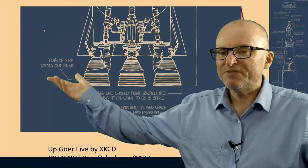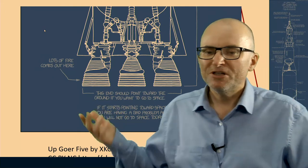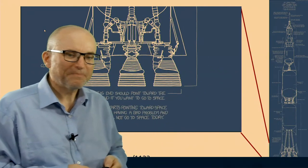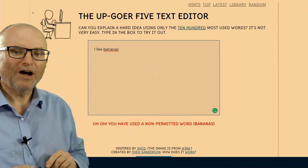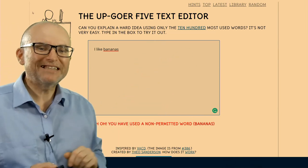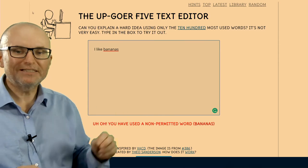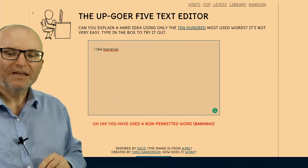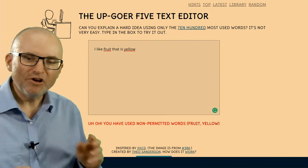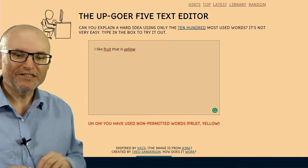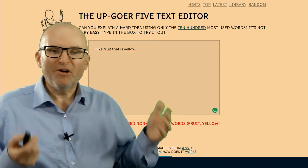And somebody has even made an editor for UpGo text editor that will only accept words that are in the top 1,000 most frequent words. When I've tried to put in 'bananas' there, there's no bananas. So I tried 'I like fruit that is yellow,' but neither 'fruit' nor 'yellow' belong in the top 1,000 words in the English language. So as you can see, that's not a good strategy.